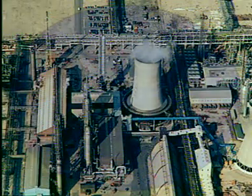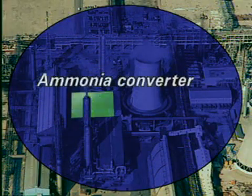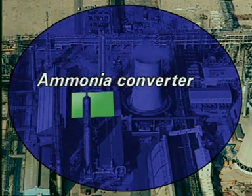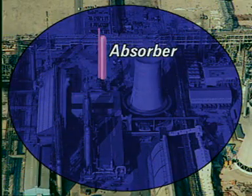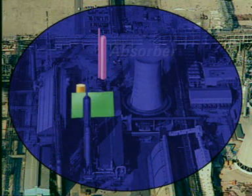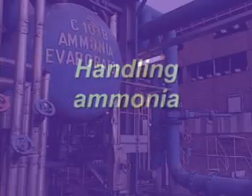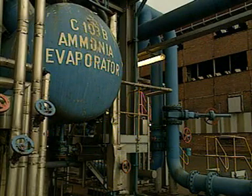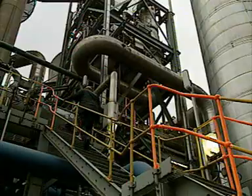In this plant, liquid ammonia is fed to the evaporator here. Ammonia is mixed with air here and passes to the converter. This is the absorber. Liquid ammonia is fed directly from the ammonia plant which is close by on the same site.